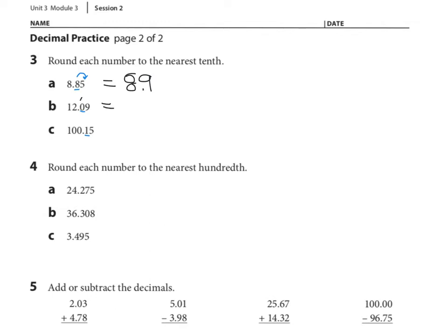Looking here to the right, we see a nine — again, that's five or more. So, the zero is going to be increased by one to become one, and the answer is 12 and one-tenth. We look to the right and see a five — five or more goes up, so the one becomes a two. Our answer here is one hundred and two-tenths.